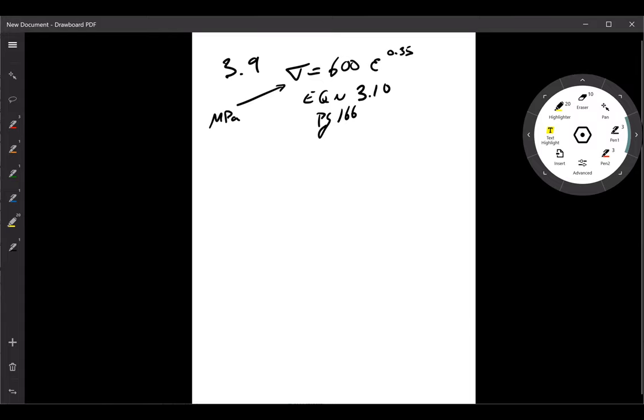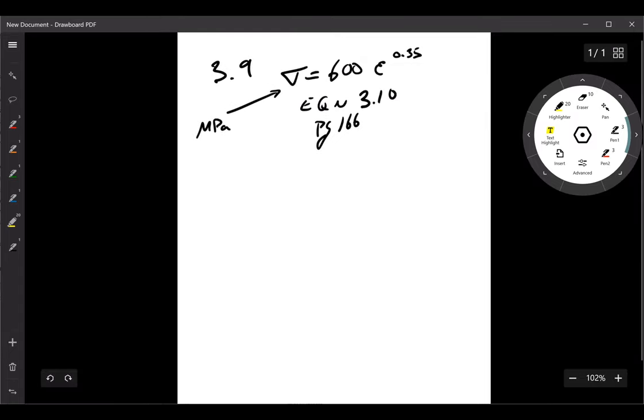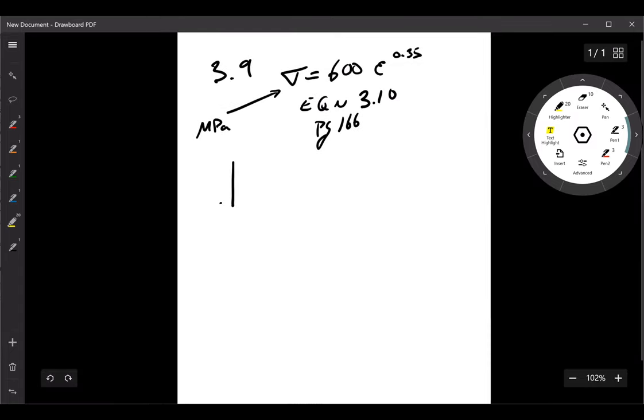This is a true stress-strain curve. So it's a true stress-strain, and it has a shape that looks like this. It's like that. That is our work-hardening coefficient.